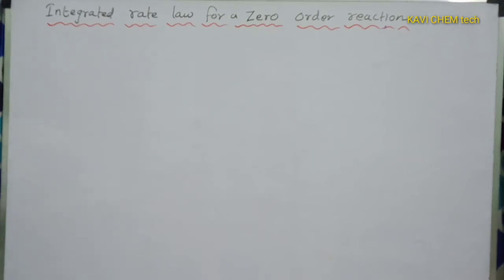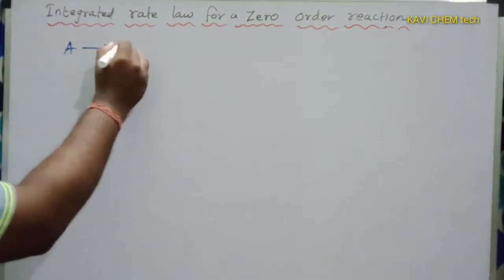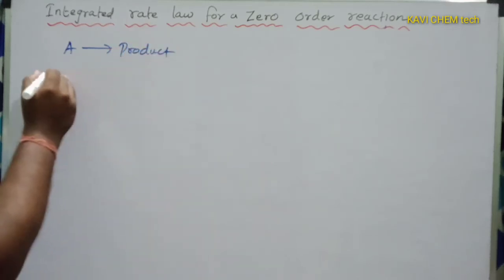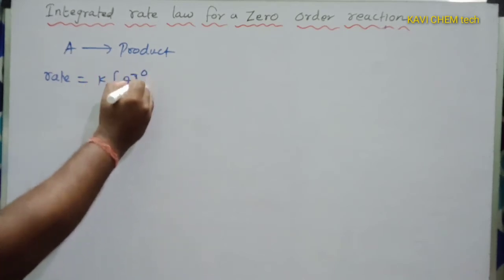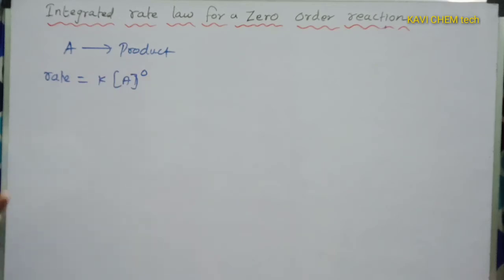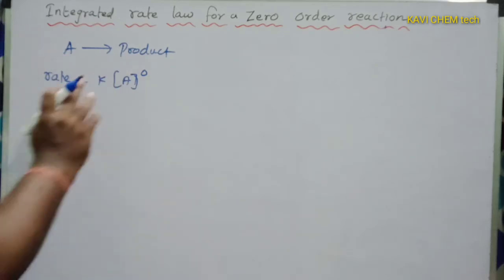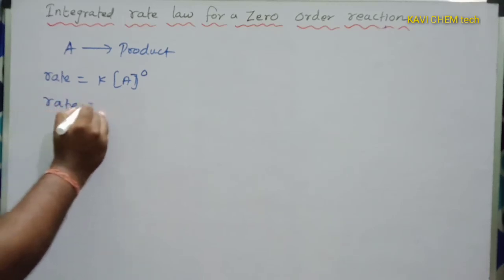Now we will discuss the integrated rate law for zero order reaction. It is almost similar to the first order reaction. Zero order means the rate of the reaction is independent of the concentration of any reactant. Such reactions are called zero order, and they are rare. For the reaction A gives product, the rate law is rate = K[A]⁰. Since anything to the power zero is one, we can simply write rate = K.